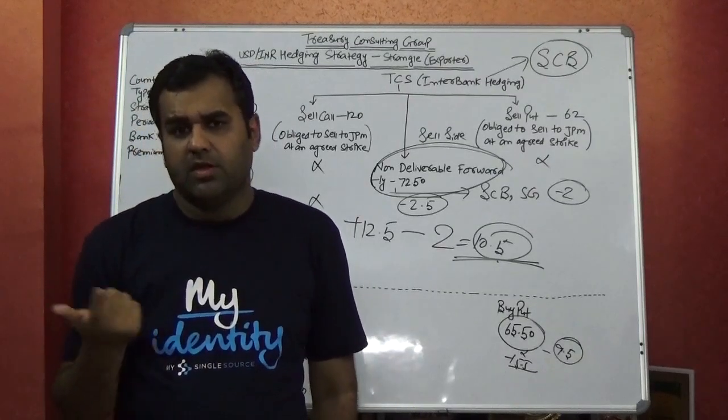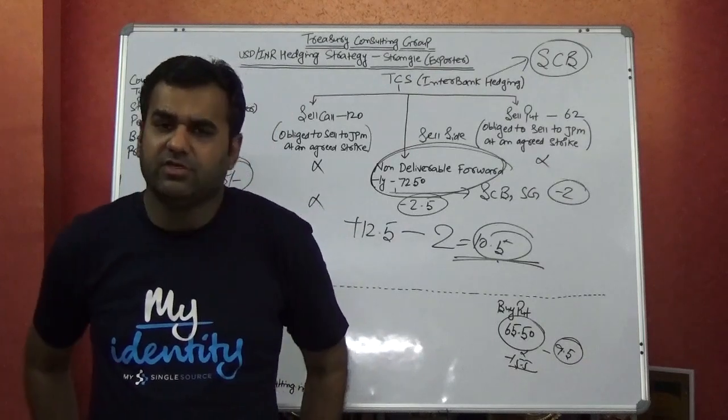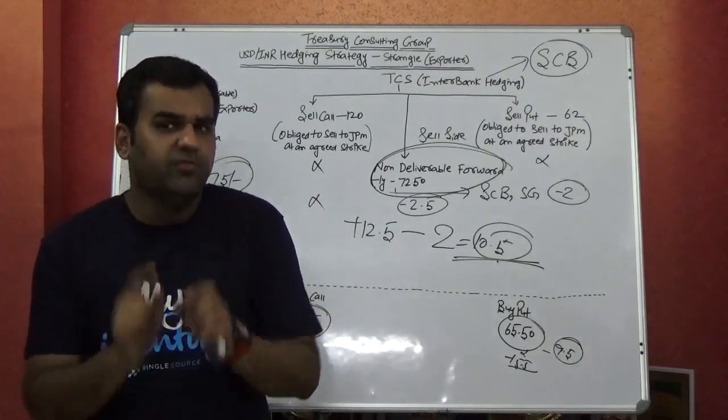Because there is not a single factor which you see in the economy which can make Indian rupee to 60 or probably 58. Everything is against Indian economy and general election is round the corner.